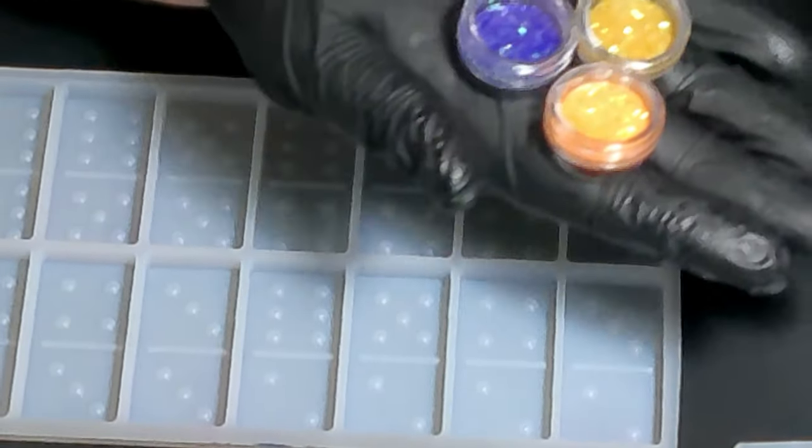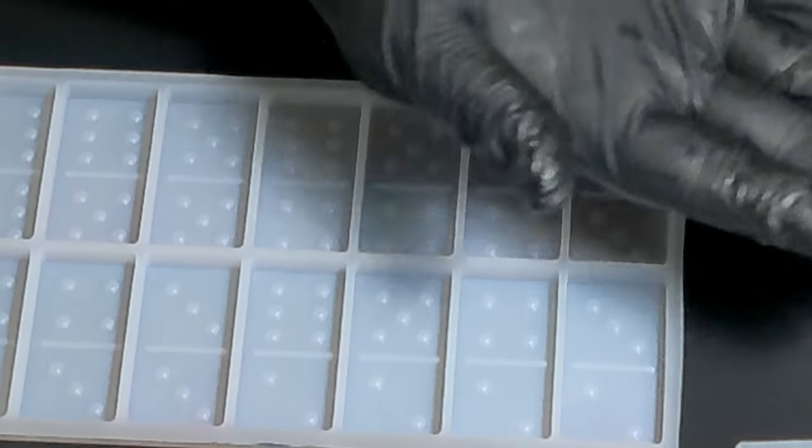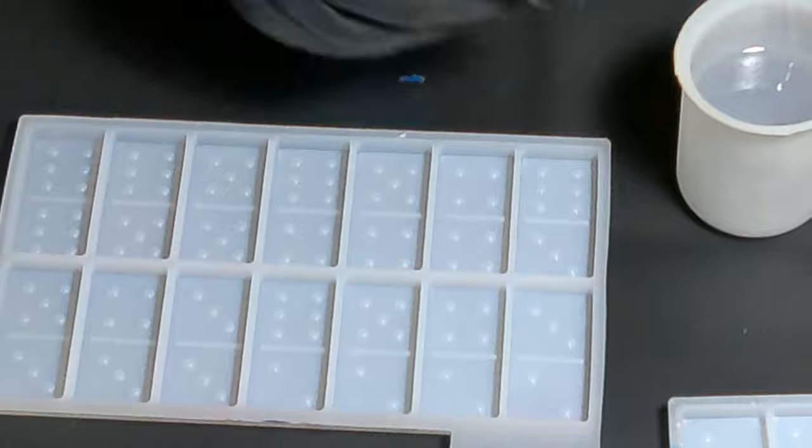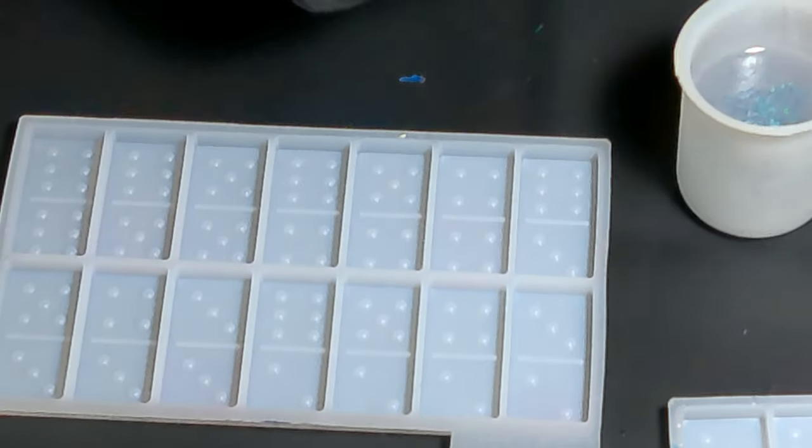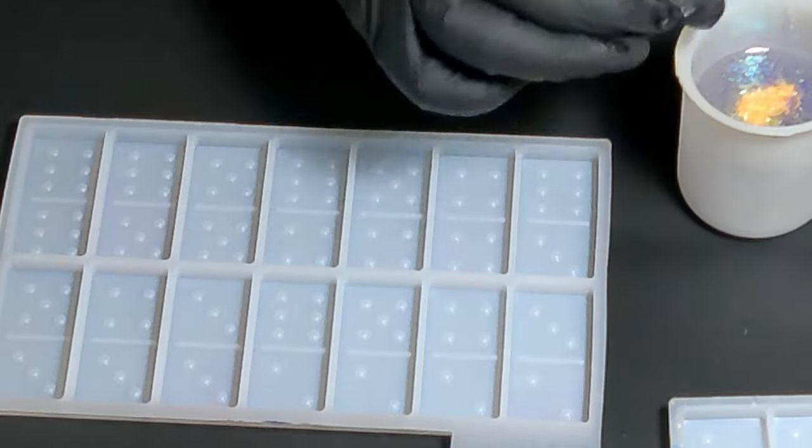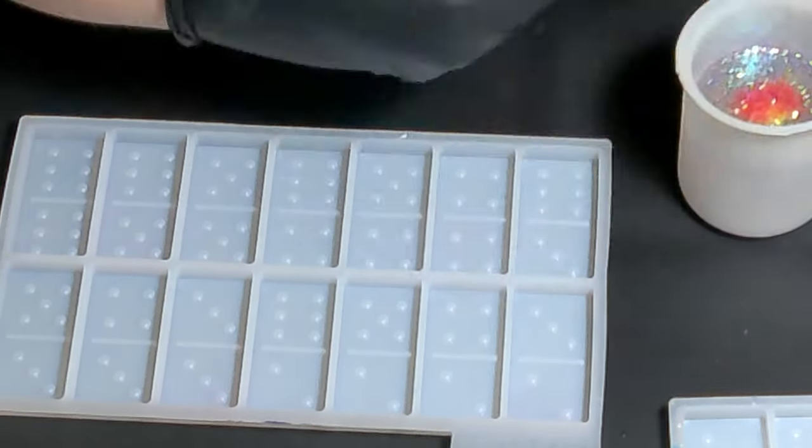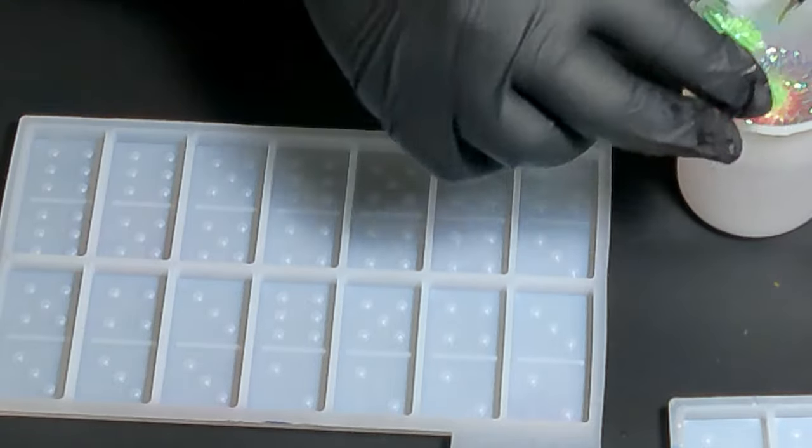I've already mixed up my resin. I'm using J Diction's High Gloss Epoxy Resin - it's a one-to-one ratio by volume, not by weight. Right now I'm just mixing in a variety of the different colors in there, and this is going to be the first layer of our dominoes.